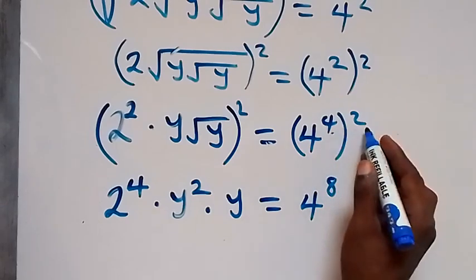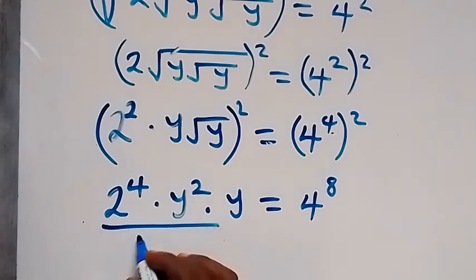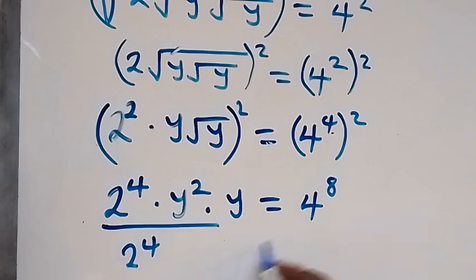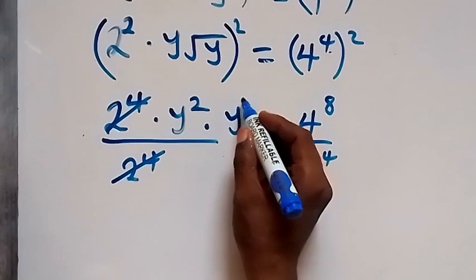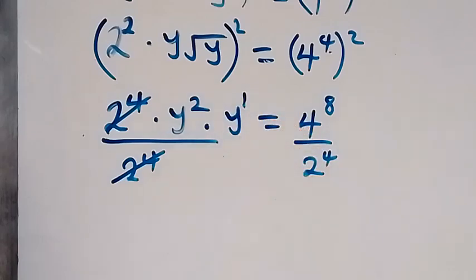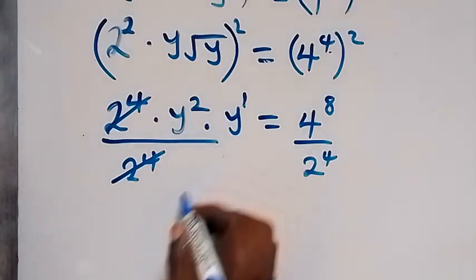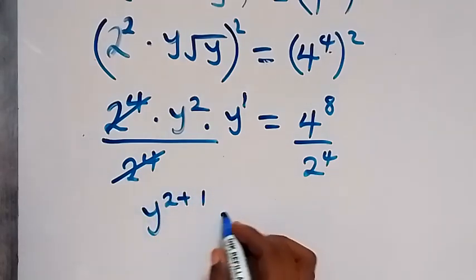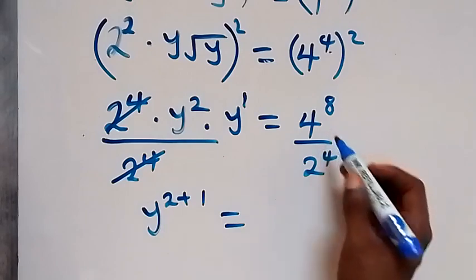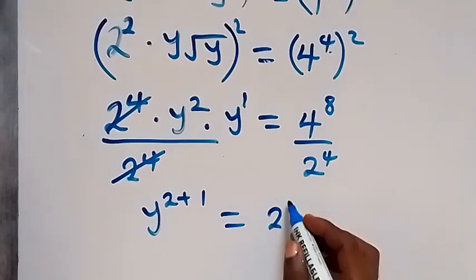Now we divide both sides by 2 raised to power 4 to remove it from the left side — they cancel each other. From here we have y raised to power 1 times y, and by the law of indices, since we have the same base, we add the powers together: this becomes y raised to power 2 plus 1. From the right side, we express 4 as 2 raised to power 2.